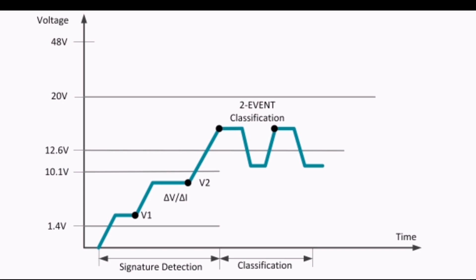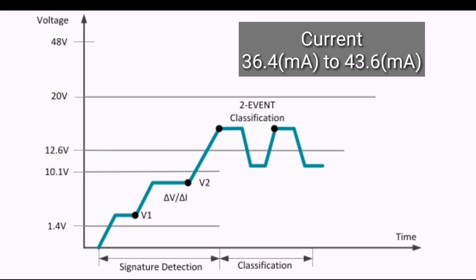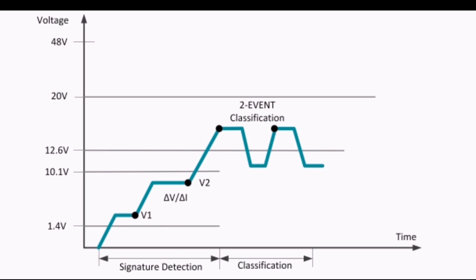When the PSE applies a voltage between 12.6 volts and 20 volts, the MAX 5969B exhibits a current of 36.4 milliamps to 43.6 milliamps. The PSE uses this classification current information to classify the power requirement of the powered device.